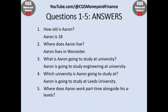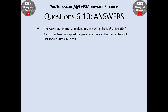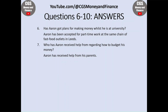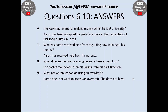Question five: Aaron works at a fast-food outlet. Question six: Aaron has been accepted for part-time work at the same chain of fast-food outlets in Leeds. Question seven: Aaron has received help from his parents regarding how to budget his money. Question eight: Aaron uses his young person's bank account for pocket money and then his wages from his part-time job.